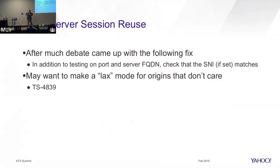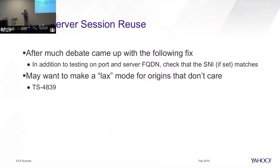The 'both' mode now checks all three: IP, FQDN, and SNI. A bug was filed — we may eventually want a 'lax' mode for origins that don't care about SNI, which would be like the old behavior. It took a long time to figure out what was actually going on. This fix is in 7.0. For most folks it won't make a huge difference since it's a pretty constrained scenario, although it was clearly happening in Jared's case.